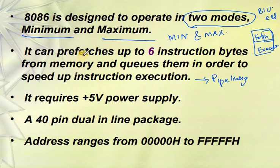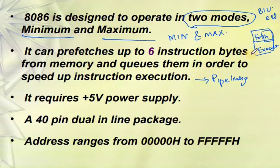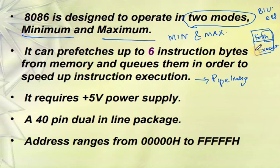Hopefully that is clear. The 8086 can prefetch up to 6 instruction bytes from memory and use them in order to speed up instruction execution. This is the advanced facility provided in the 8086 microprocessor.